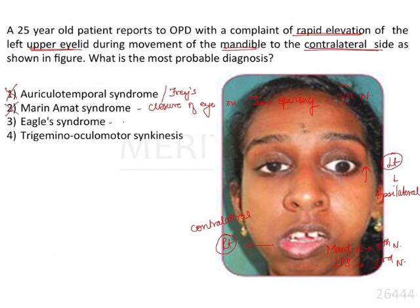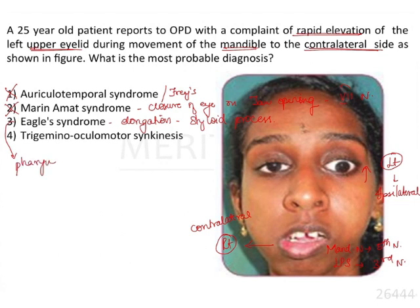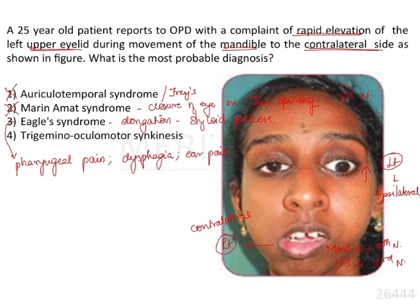Eagle syndrome is caused by elongation of the styloid process or ossification of the stylohyoid ligament. The elongated styloid process compresses adjacent vessels — the internal or external carotid artery — bringing about pharyngeal pain, dysphagia, and ear pain (otalgia). It can occur bilaterally or unilaterally. The symptoms of Eagle syndrome do not match our case, so it can be omitted.